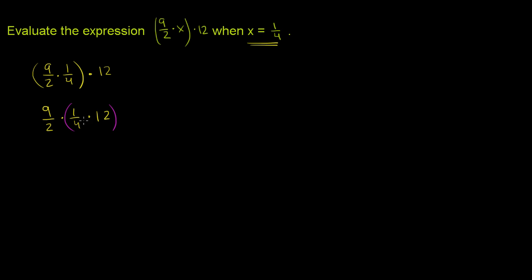And the reason why I'm doing this first is because 1 fourth times 12 is very simple. That's the same thing as 12 divided by 4. Or if you want to think about it this way, 1 fourth times 12 over 1, which would be 12 over 4, which is equal to 3.